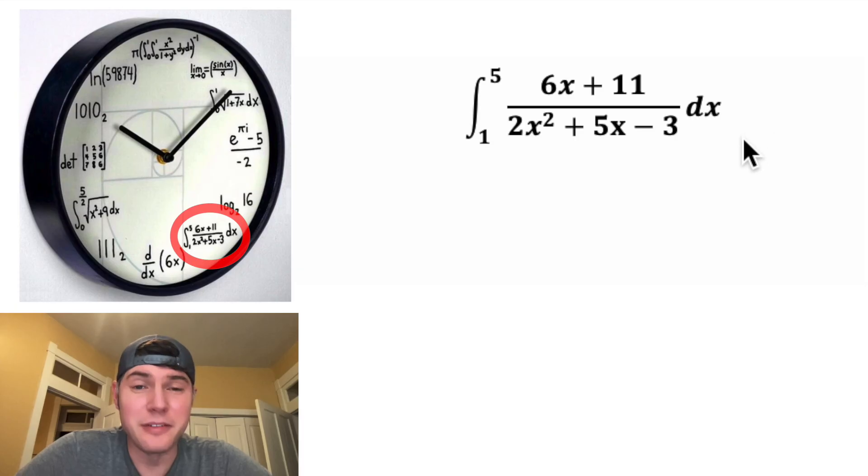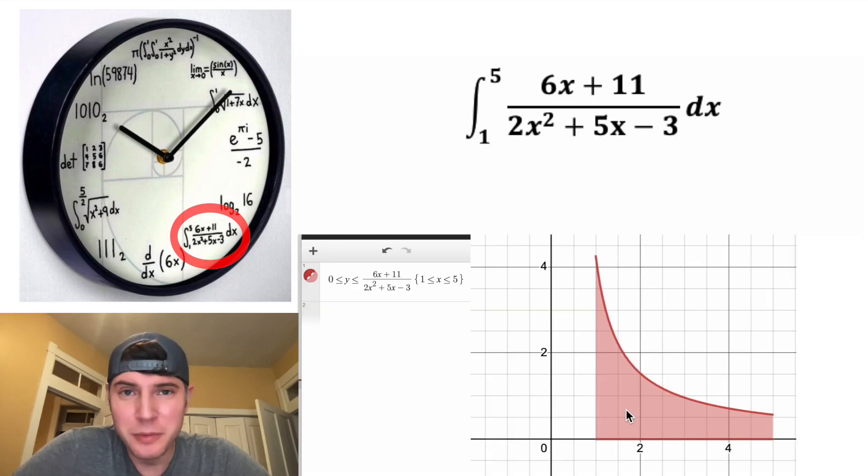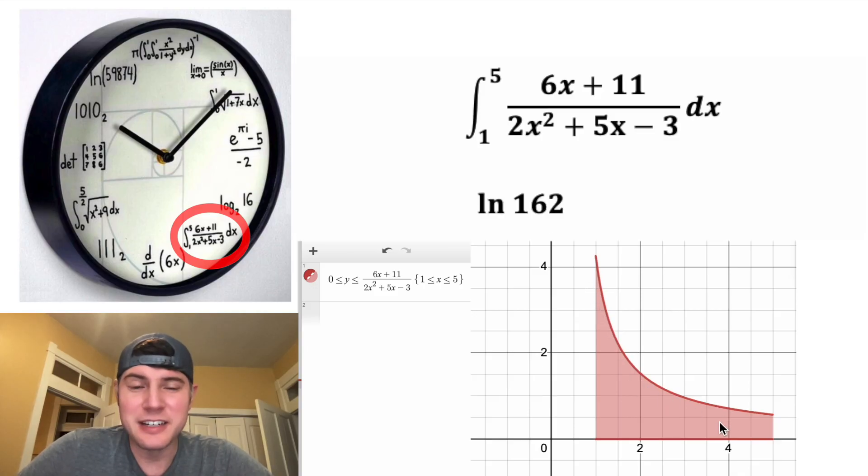For the five o'clock hour, we have another integral. So once again, the integral means the area between the x-axis and this graph between the limits of integration, which in this case was one and five. This box right here is equal to four, so you can kind of see how this would be equal to about five. And if we do the math, we get the natural log of 162, which once again is irrational. It's approximately 5.0876. Once again, this clock does an approximate value for this hour.